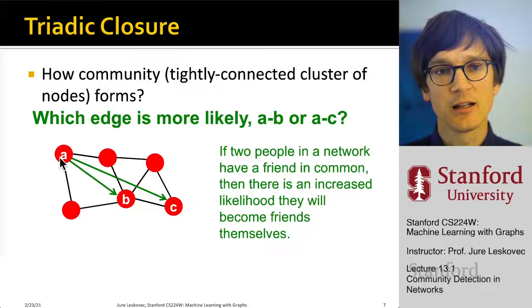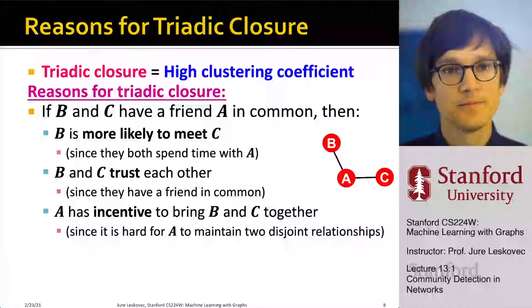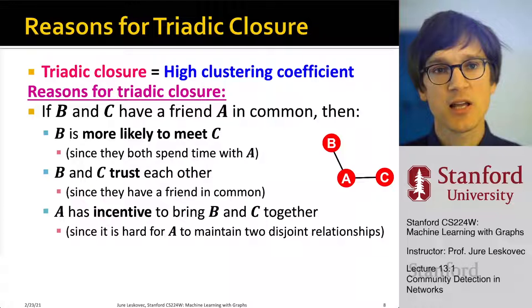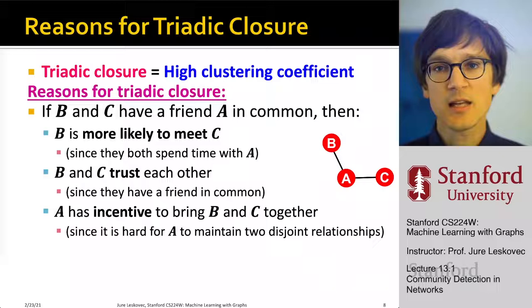This relates to clustering coefficient — the fraction of your neighbors that are connected with each other — which is essentially a metric of triadic closure. If B and C have a common friend A, why should B and C link to each other? First, they are more likely to meet because A might invite them both for coffee. Second, B and C are more likely to trust each other because they both trust A. Third, A has incentive to bring B and C together because it requires effort to maintain two separate relationships.